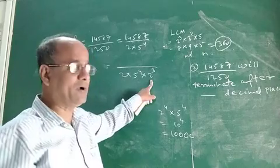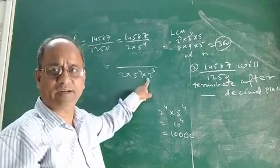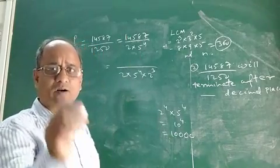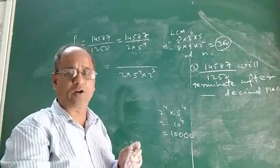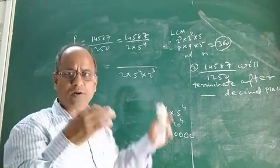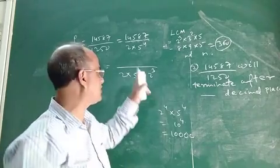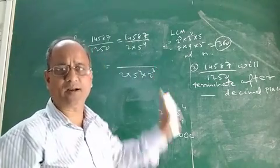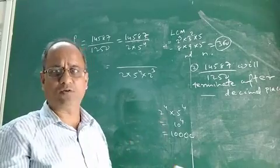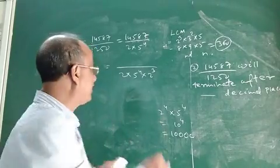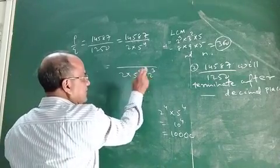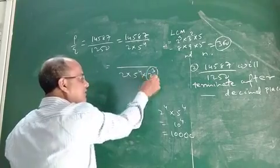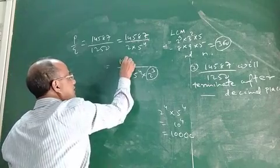Since we multiply 2 to the power 3 to the denominator, we must also multiply the same 2 to the power 3 to the numerator, so that the value of the rational number does not change. We multiply both numerator and denominator by 8.